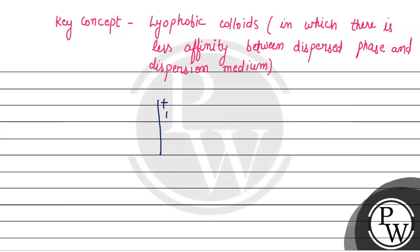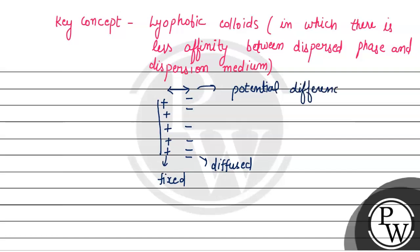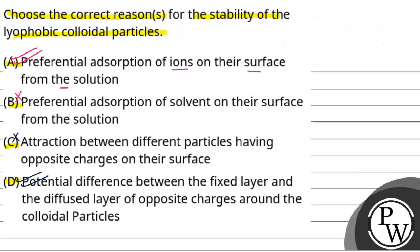We have a metal surface. Suppose positive charge is adsorbed on it — this is our fixed layer. And in our diffused layer, negative charge develops. This is our diffused layer. Due to the opposite nature of these charges, a potential difference is generated. So option D is also correct, because opposite charges generate a potential difference. So options A and D are correct for this question.